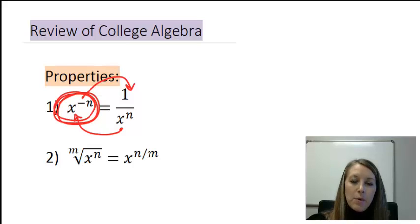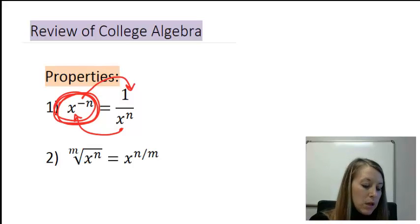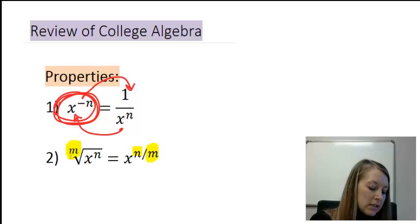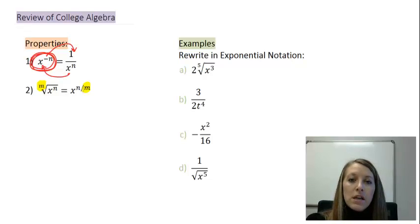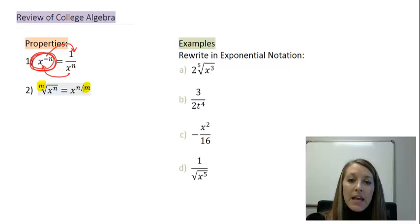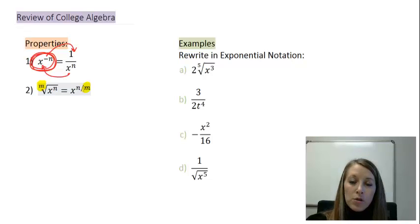The other way we can rewrite things as exponents is from radicals or roots. If we have the nth root of x to the nth power, we can rewrite this as x to the n divided by m, where m is the root and goes into the denominator of our exponent. It's important to keep the rewriting step and the derivative step separate — rewriting is algebra, not calculus. Most students make mistakes by blending those two steps.